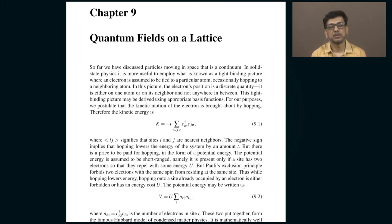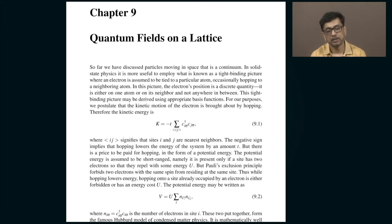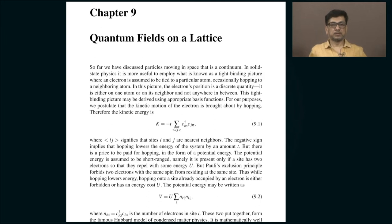It is therefore important to learn how to study the dynamics of electrons in a solid, given that those electrons move around in a pre-existing lattice of positive charges whose locations are known beforehand. This is precisely chapter 9: quantum fields on a lattice. The fields I am referring to is the electron field — the fermion field. It actually makes more sense now to stop thinking of space as a continuum.